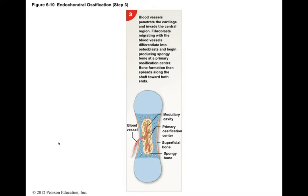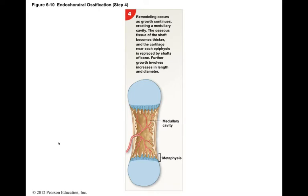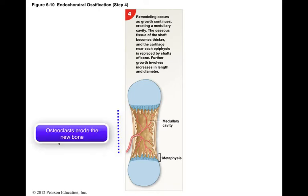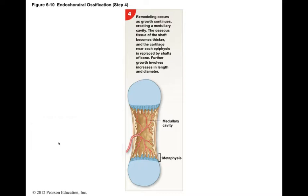In this stage, the diameter of the diaphysis is small, and it's filled with spongy bone, and there is no medullary cavity. In step four, as the bone enlarges, osteoclasts appear and begin eroding the trabeculae in the center of the diaphysis, creating a medullary cavity.